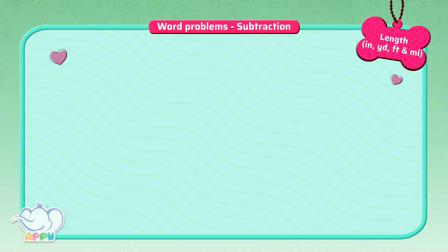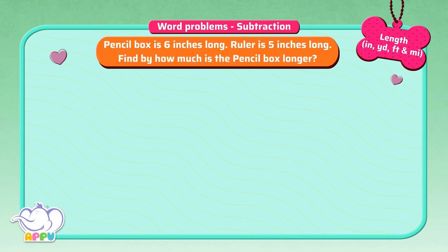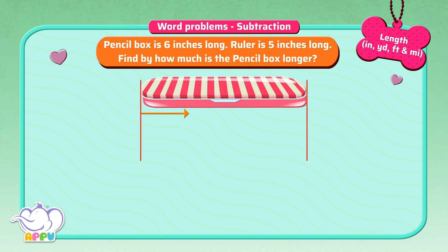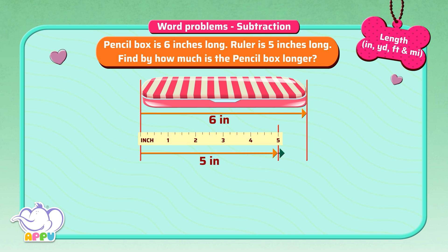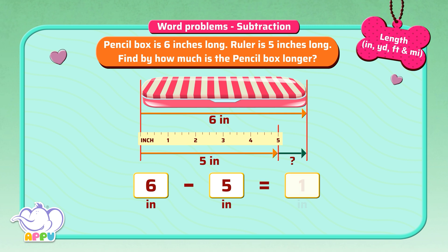Word problem subtraction. The pencil box is 6 inches long. The ruler is 5 inches long. Find out by how much the pencil box is longer. To find which is longer, we subtract each of their lengths. So 6 inches minus 5 inches is equal to 1 inch. So the pencil box is 1 inch longer than the ruler.